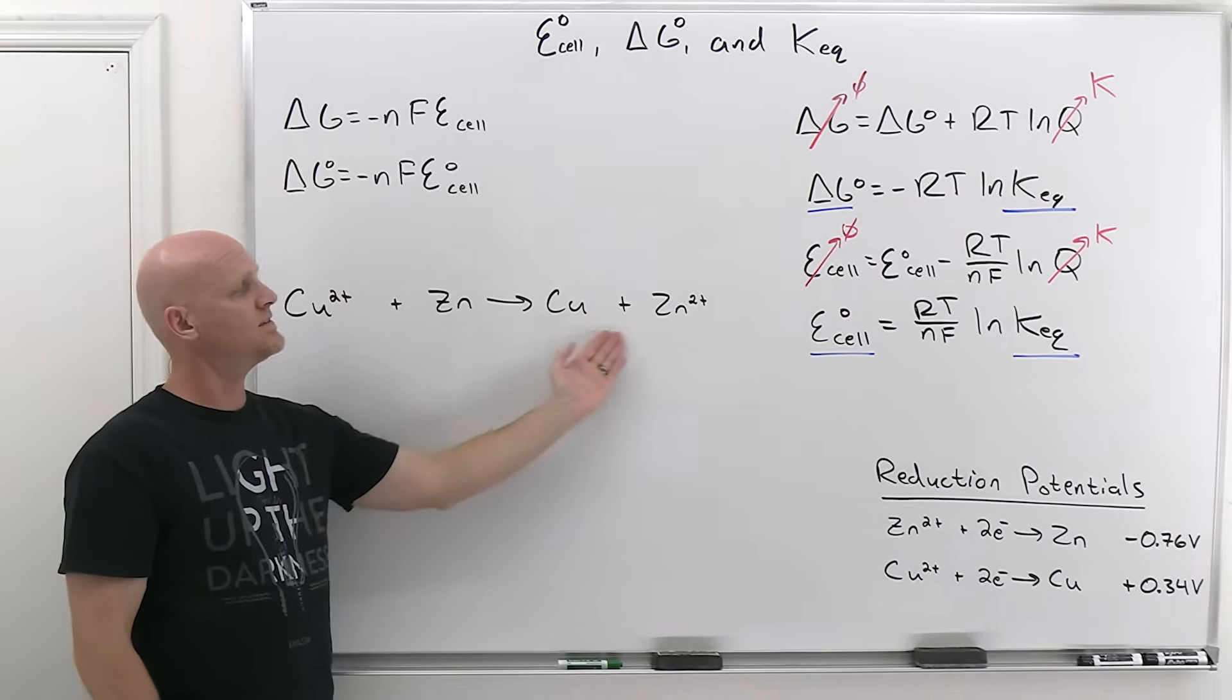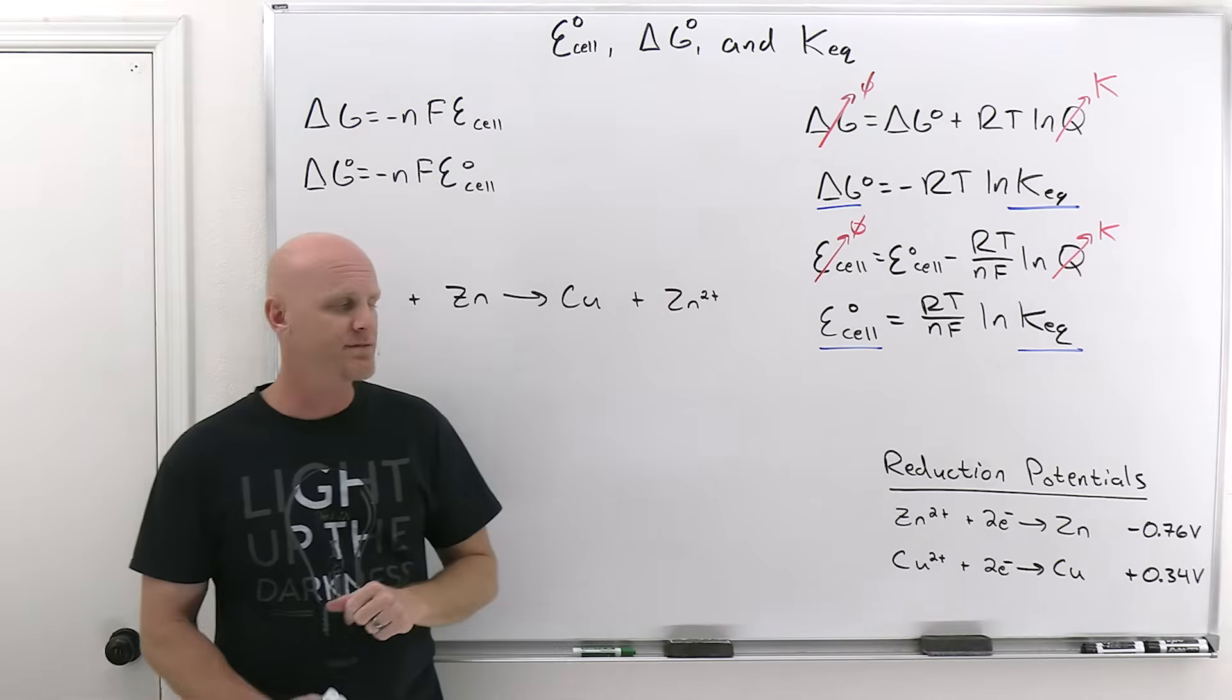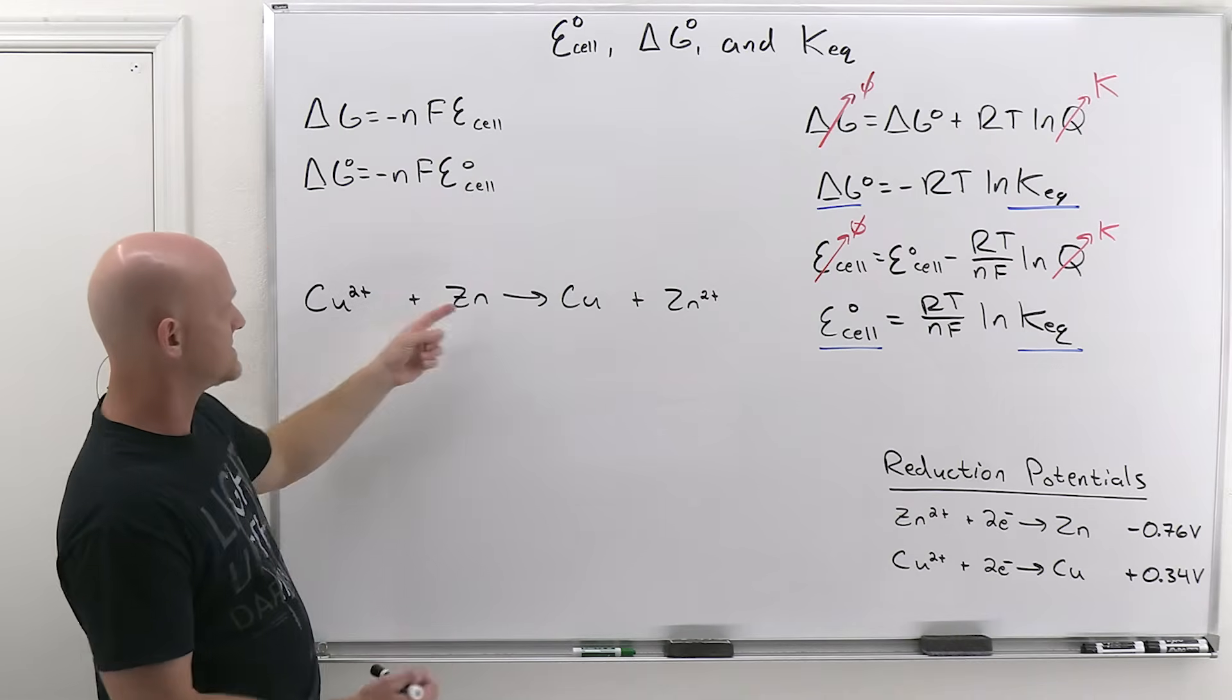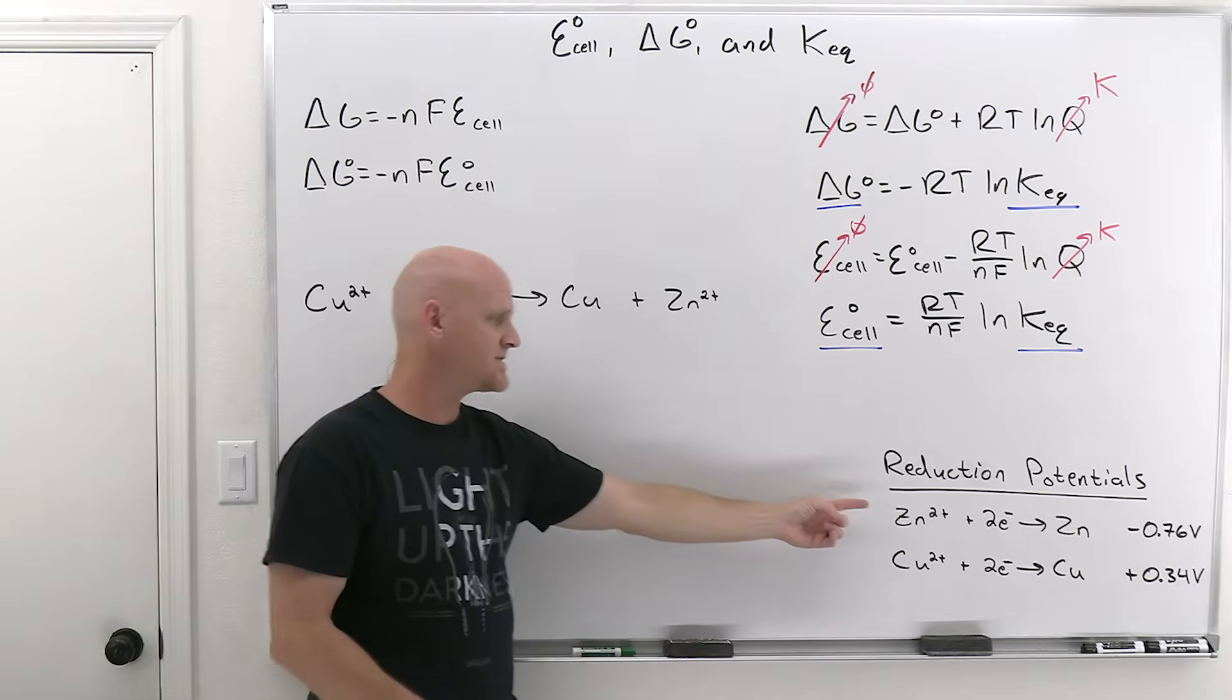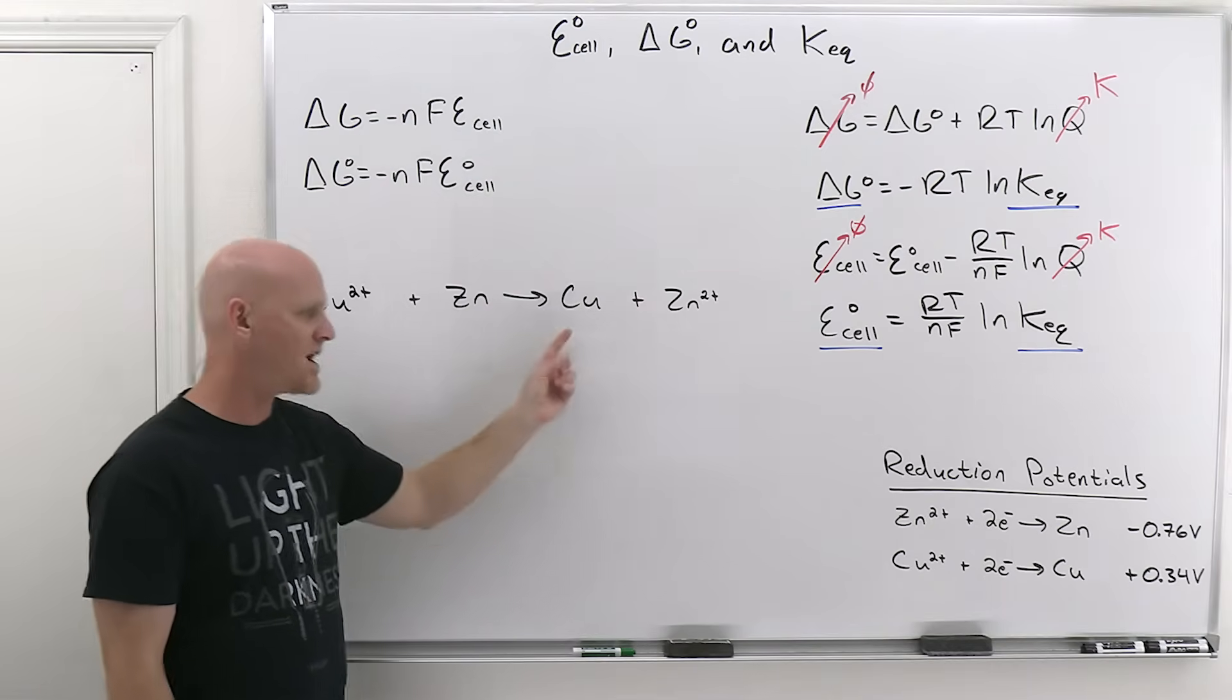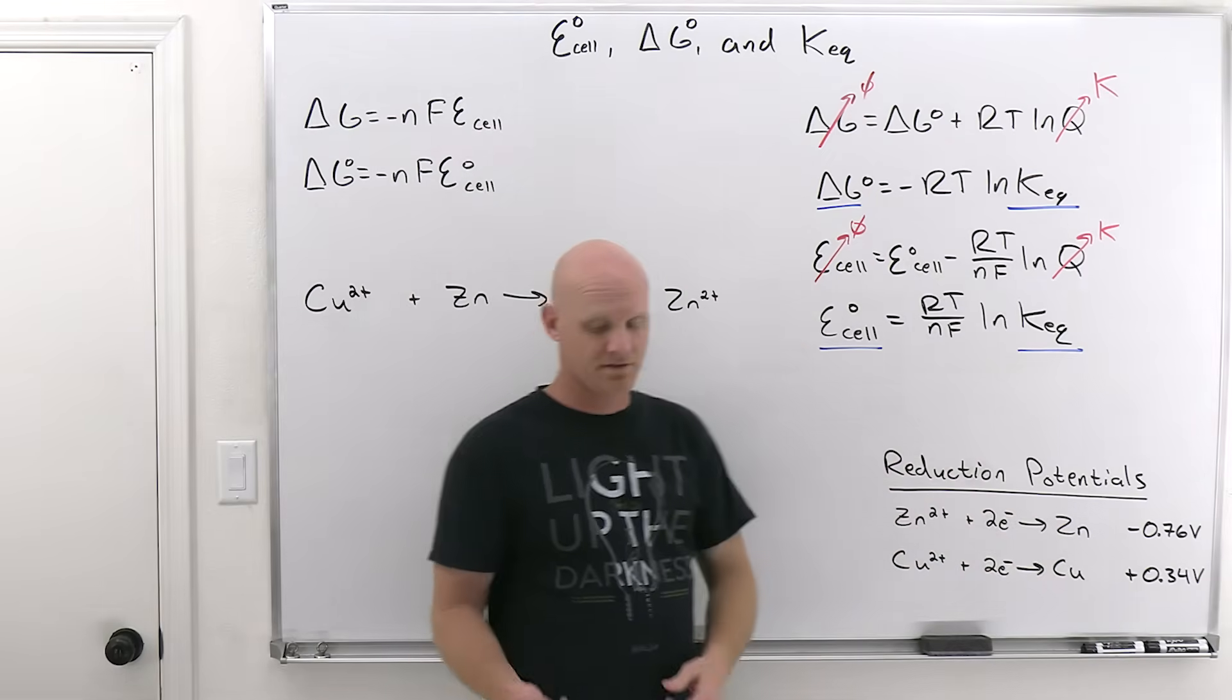So we're going to calculate E cell standard for this, given some reduction potentials. And I'm just taking off the two that we need here, but typically you'd have a whole table of them at your disposal. So we're going to use that to calculate your standard value for E cell here. And we can see that zinc is exactly backwards from what we see here, it's getting oxidized. This is the reduction potential. So instead of negative 0.76 volts, it's positive 0.76 volts is one way to look at that. And then copper two plus to copper, exactly what we see here. So positive 0.34 volts.